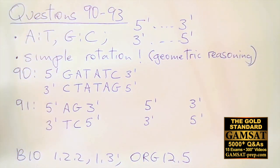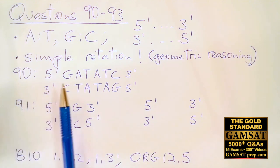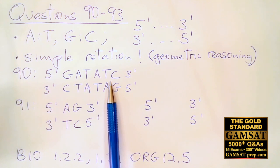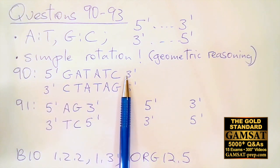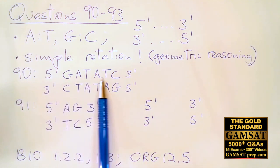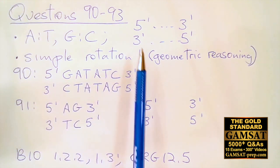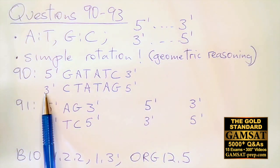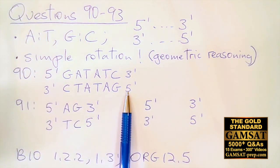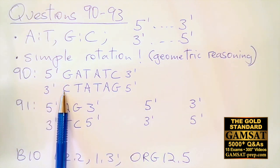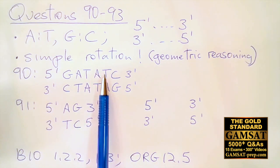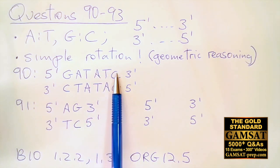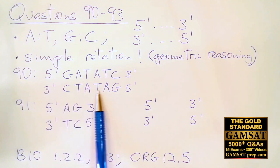Question 90: consider the single-stranded sequence provided by ACER. We have a 5' to 3' sequence given. It is going to bind to a 3' to 5' strand following the base-pairing rules: G to C, A to T, A to T, A to T, A to T, A to T, and G to C. So this must be the complementary strand of DNA.